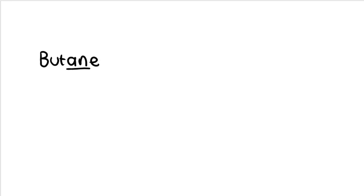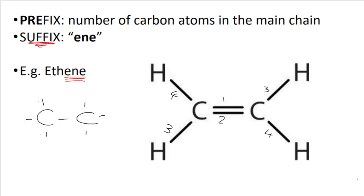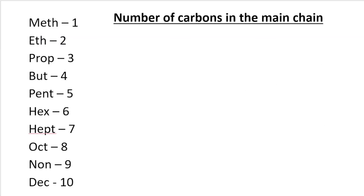Remember, alkanes ended in '-ane', like butane. Alkenes end in '-ene'. The prefix indicates the number of carbon atoms in the main chain — for example, 'eth-' means two carbons. So 'ethene' has two carbons and ends in '-ene' because it's an alkene. Here are the prefixes depending on the number of carbons: this applies to all homologous series.